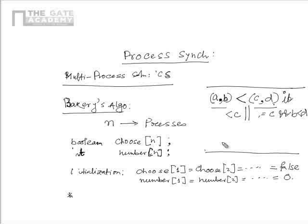So the ordering (a, b) < (c, d) means (a, b) comes before (c, d) in order: either a is less than c, or a equals c but b must be strictly less than d.